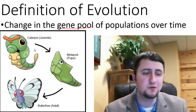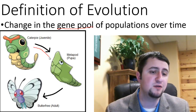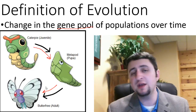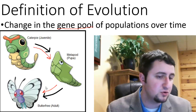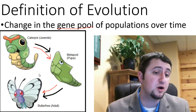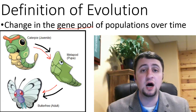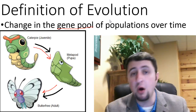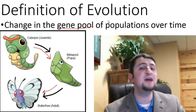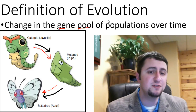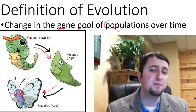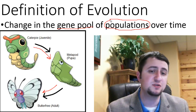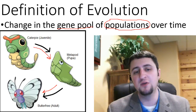Now you may be familiar with Pokémon, how Caterpie can evolve into Metapod and Metapod can evolve into Butterfree. Well, that is not a very good example of evolution — that's not how evolution works. That is more of an example of metamorphosis. Evolution — and this is the most important thing to understand in this entire unit — evolution works on populations. Individuals don't evolve; populations evolve.